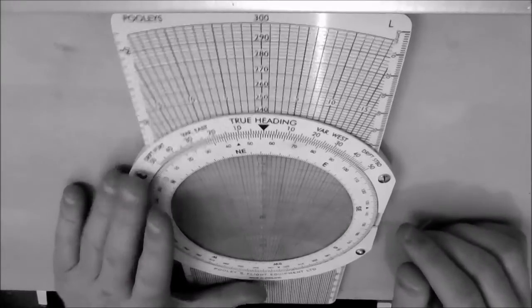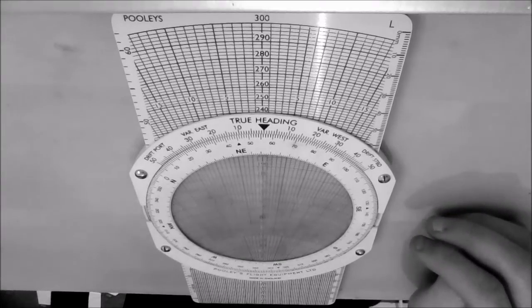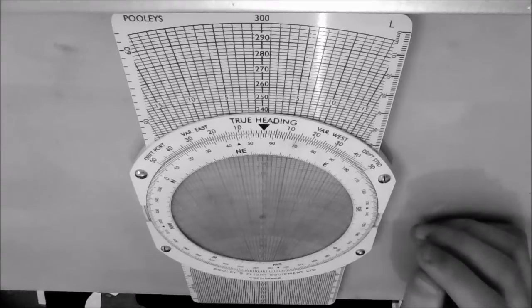So in this question we have the TAS which is 132, the heading true is 053, and the wind is 250 at 15 knots. So as with all the others, the first thing you want to do when you've got the wind is put that in first.